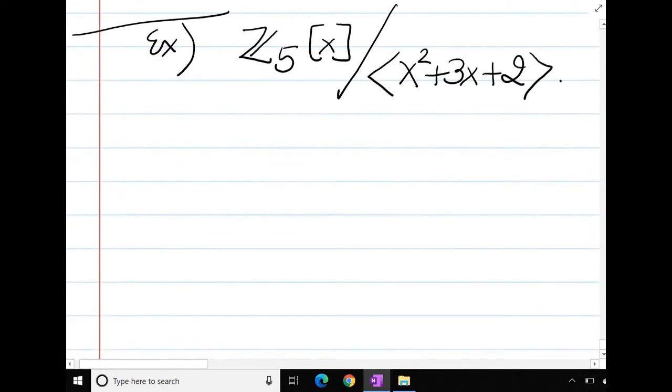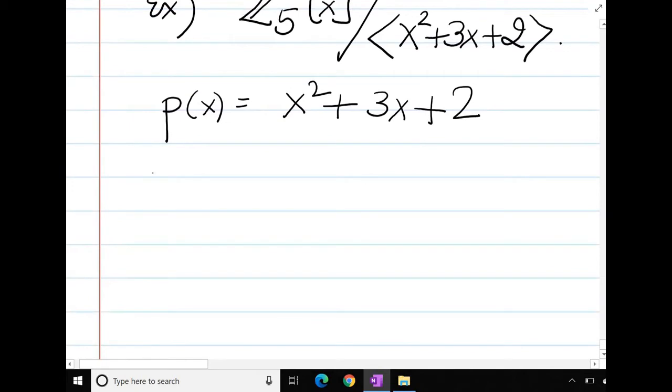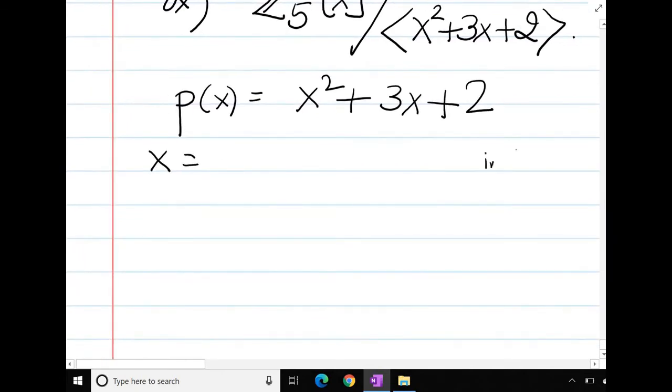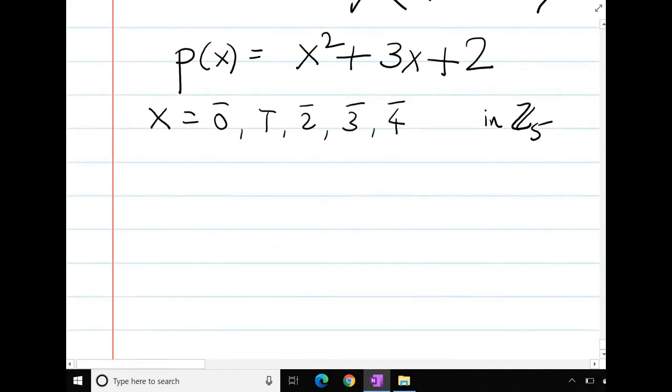Now what can I say about this? Look at x squared plus 3x plus 2, and take x equal to, in Z_5, 0, 1, 2, 3, 4. Then I will check each of the points. Check if we get a root.